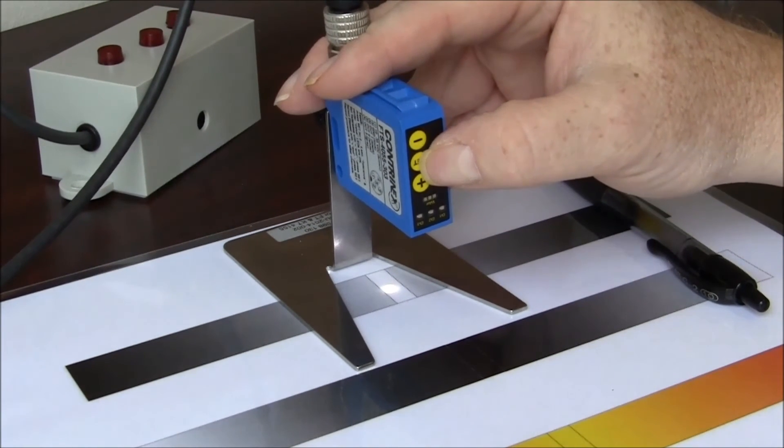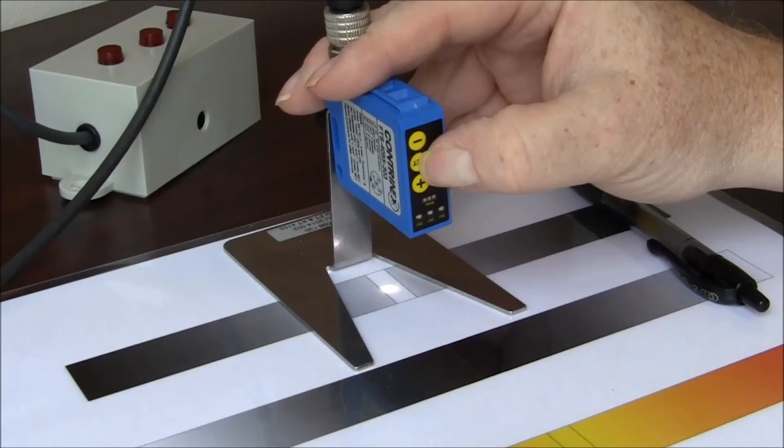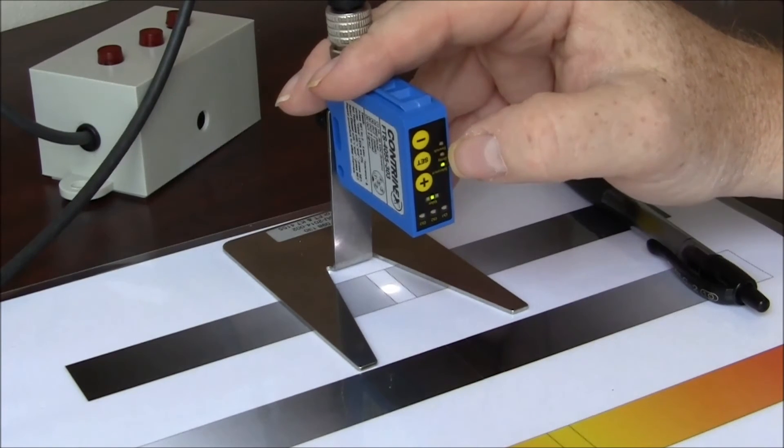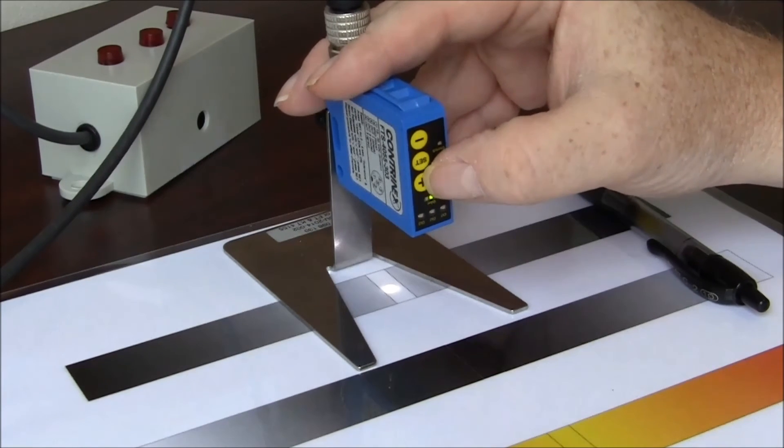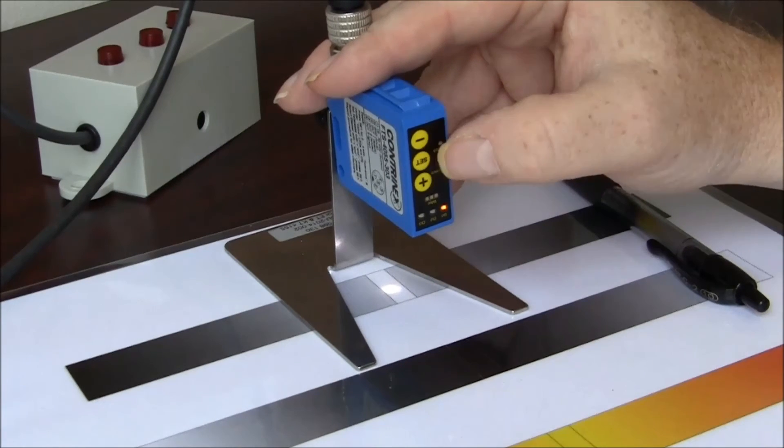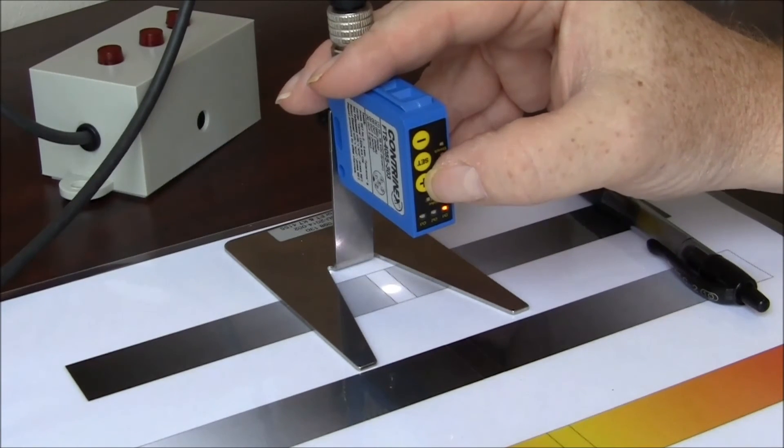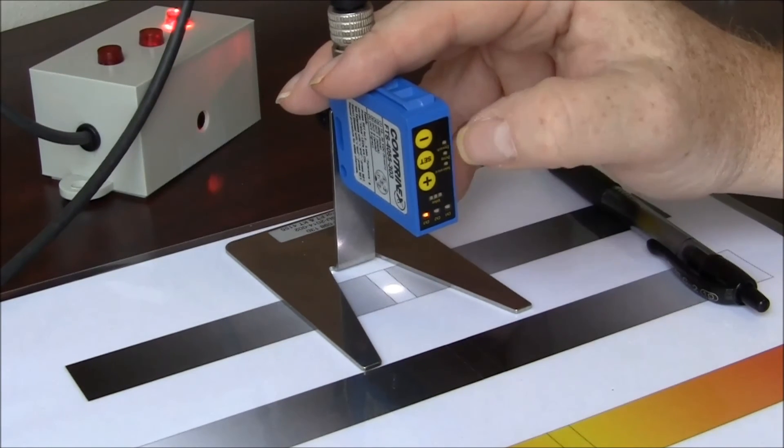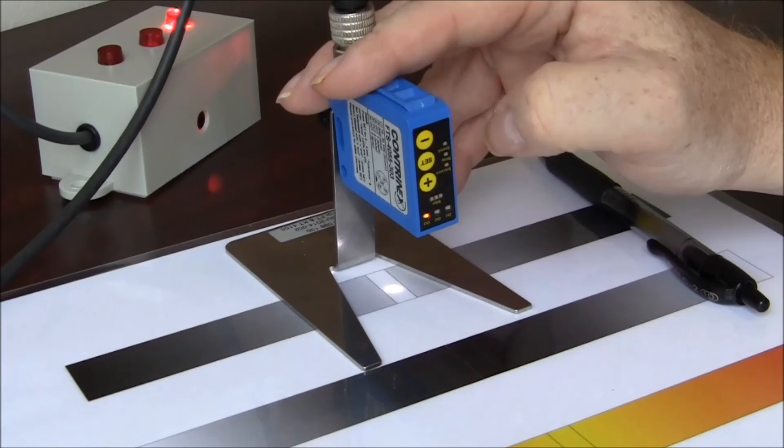And we will set it, and we will select the tolerance. I'm going to give it the greatest tolerance. And I will hit set. I will select it for channel 3 and hit set one more time. And now we have this set.